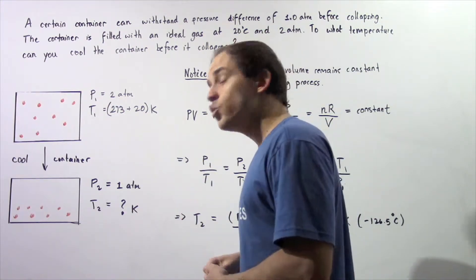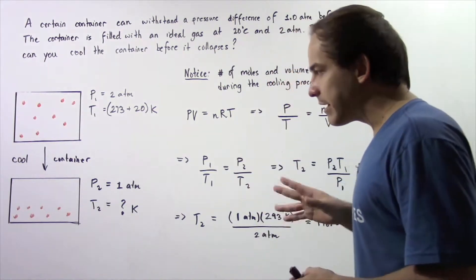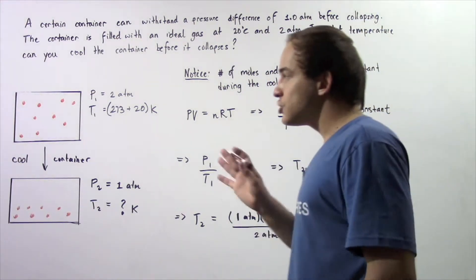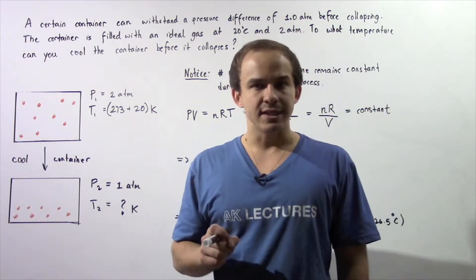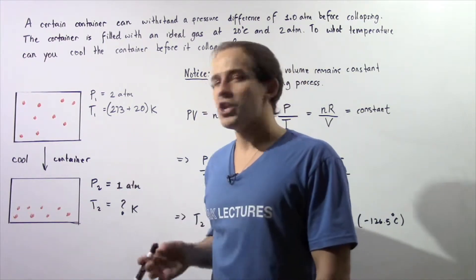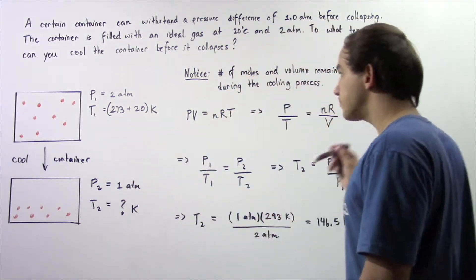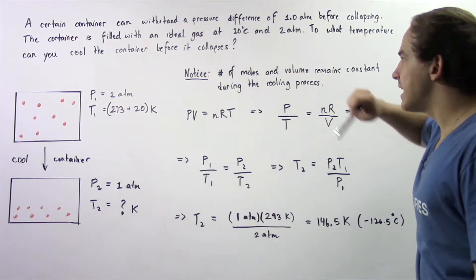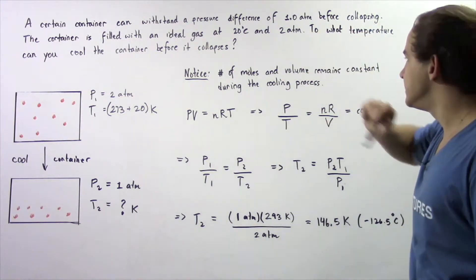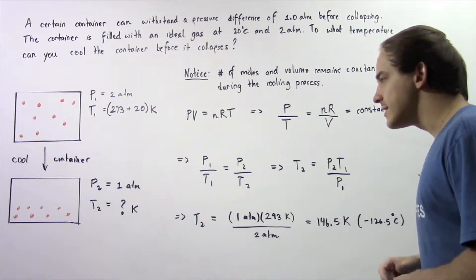Let's begin by first noticing that two things remain constant: the number of molecules and therefore the number of moles, as well as the volume. So the number of moles of our gas and the volume of our container remains constant during the cooling process.